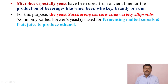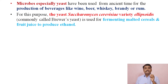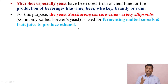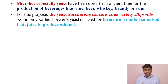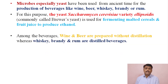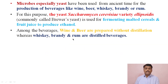For this purpose, the yeast Saccharomyces cerevisiae is used for fermenting malted cereals and fruit juice to produce ethanol. Among the beverages, wine and beer are prepared without distillation, whereas whisky, brandy, and rum are distilled beverages.